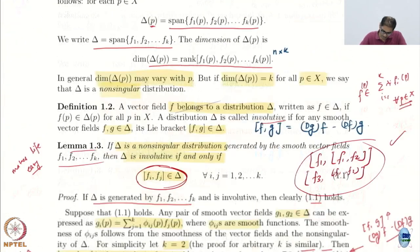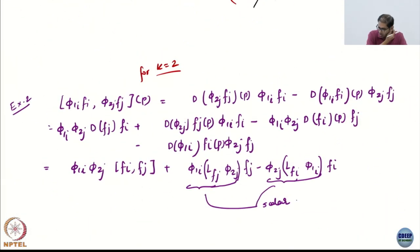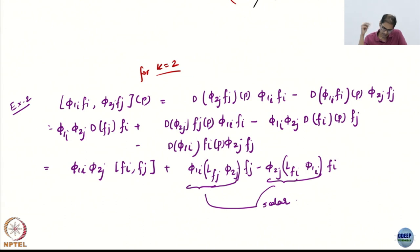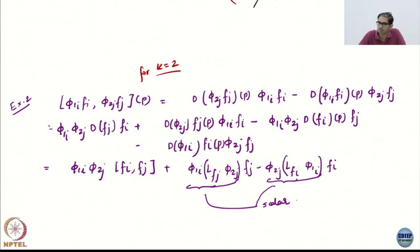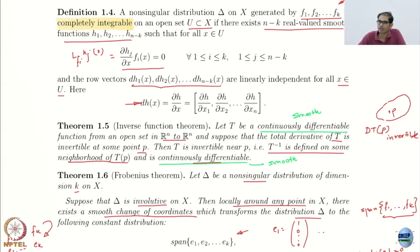I believe this expression has a problem. It seems it is specialized to k equal to 2 because otherwise there would be summations and such. Anyway, this is something you can just look at on your own. Next time we will continue with our discussion on Frobenius theorem. We will stop there. Thank you.